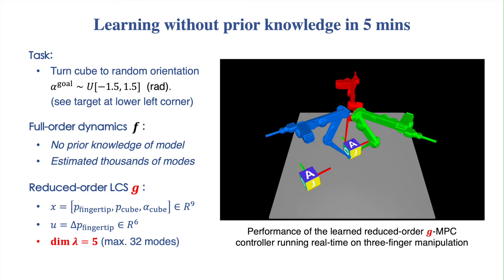We use our method to solve 3-finger robotic hand manipulation. The first task is cube turning—to turn the cube to any random orientation. With no prior knowledge, our method learns a task-driven reduced-order LCS to solve the task with less than 5 minutes of real data. The video here is the real-time running of the learned reduced-order MPC controller on the system.